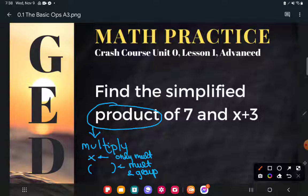This says find the simplified product of seven. Okay, that's just a number. But and x plus three. This is not just a number now. This is this whole expression. But listen to the way this is phrased. I want you to find the product of seven and x plus three. I'm saying I want you to multiply seven by all of this stuff.